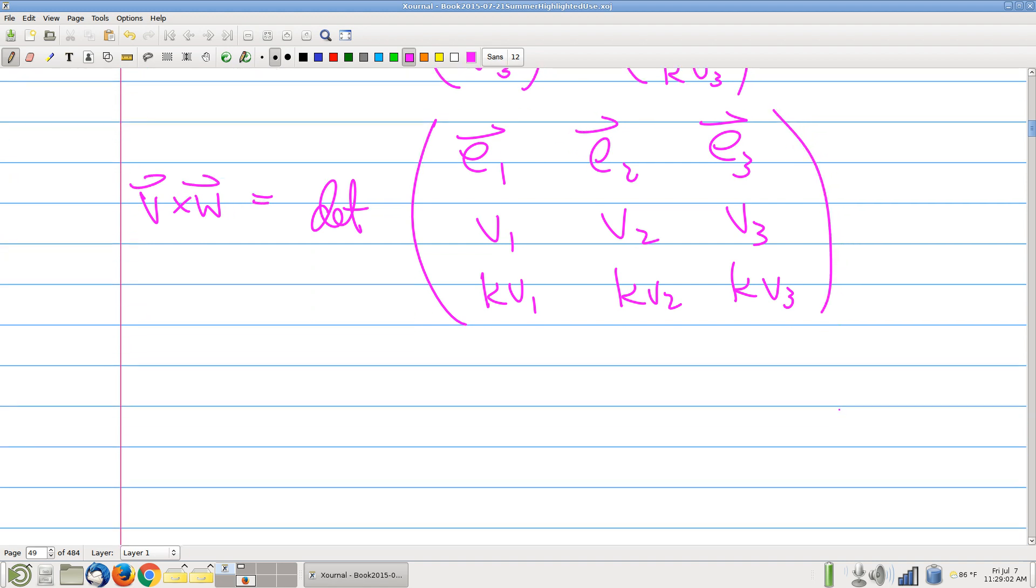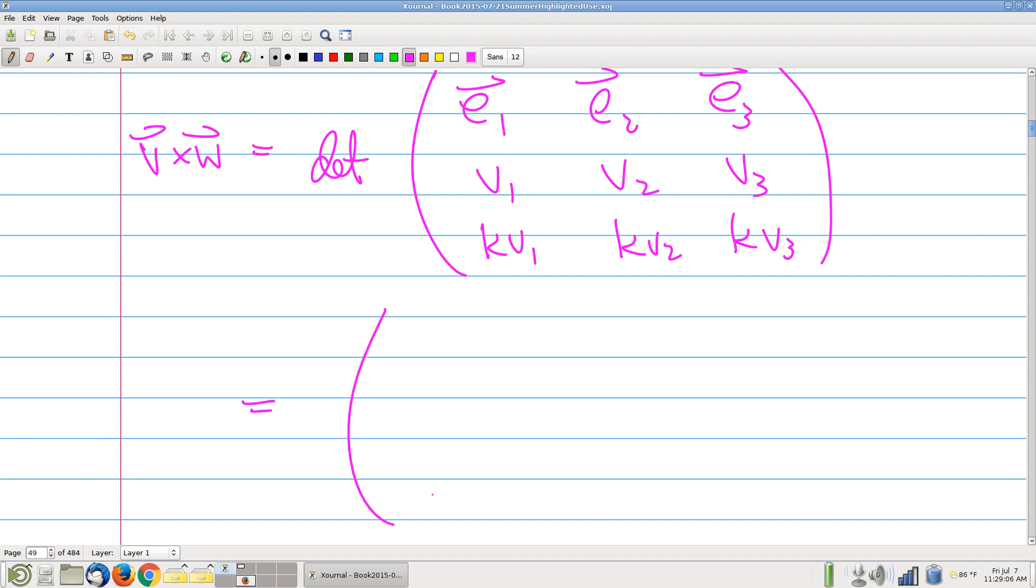So the first coordinate - remember the way you get that is you cross out and look at what's left over, and you take the little 2x2 determinant. I get V2 times KV3 minus V3 times KV2. Let me write that out: V2 times KV3 minus V3 times KV2, which of course is 0. Make sense so far? Okay, so that was just the first coordinate.